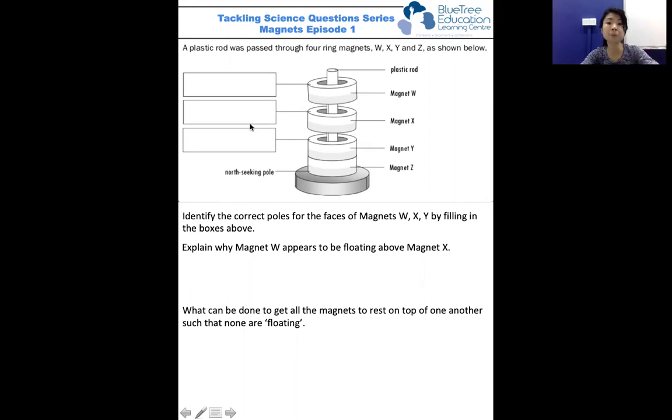This is quite simple. Let's start with magnet Z. We actually see that the question has labeled for us that this portion is the north pole of magnet Z. So very naturally, this will be the south pole of magnet Z.